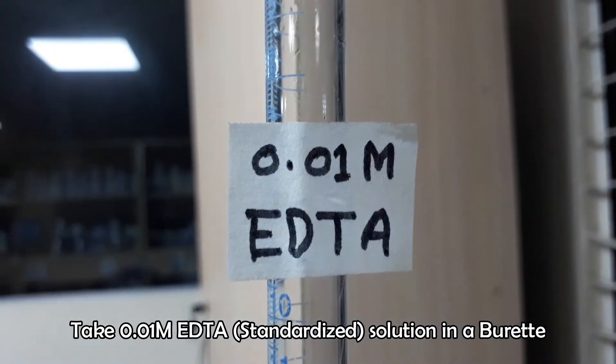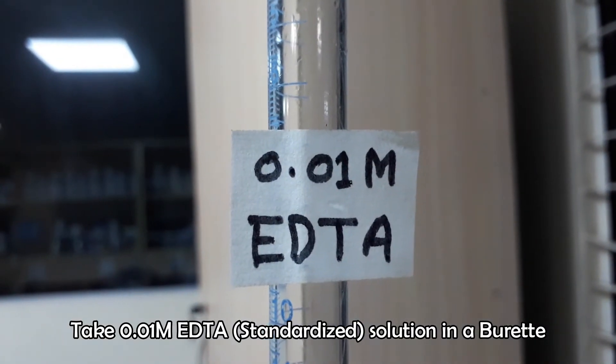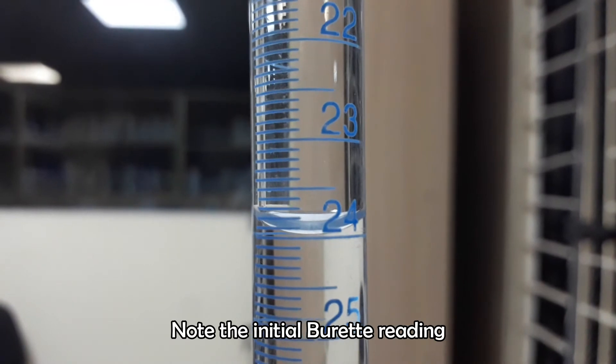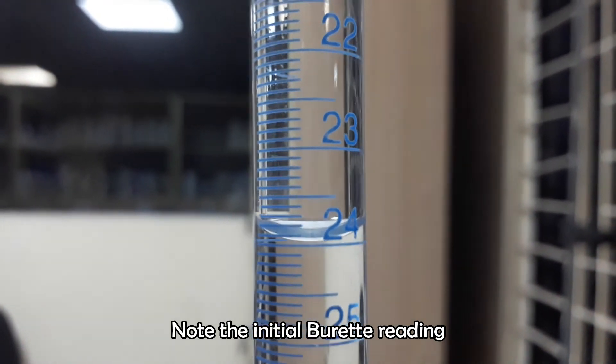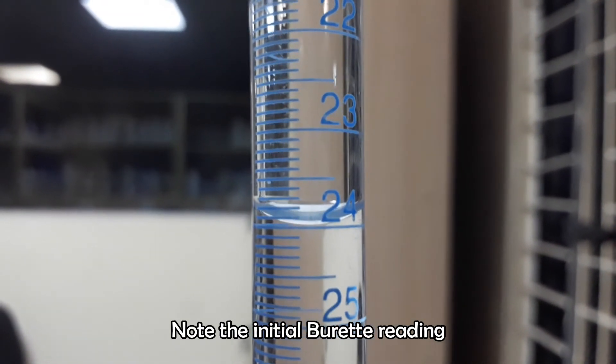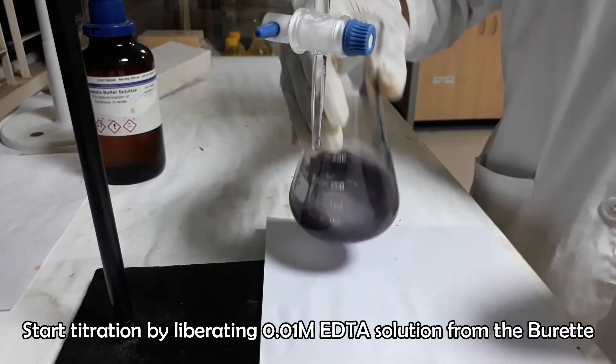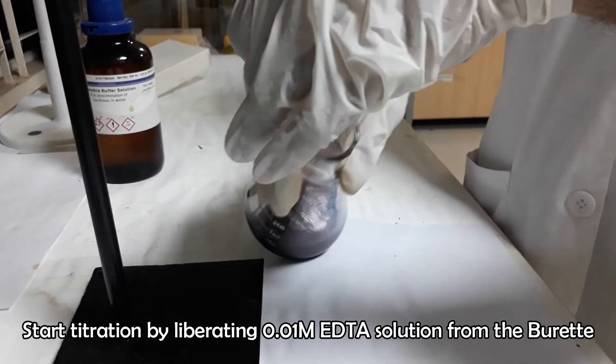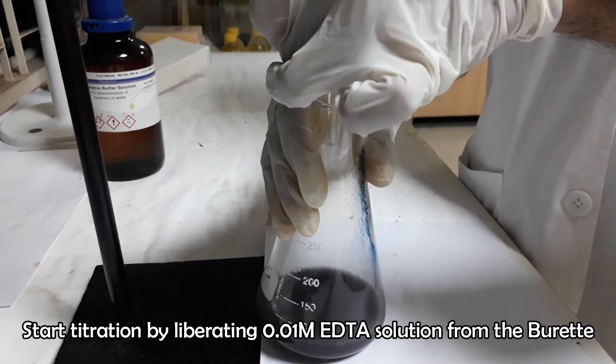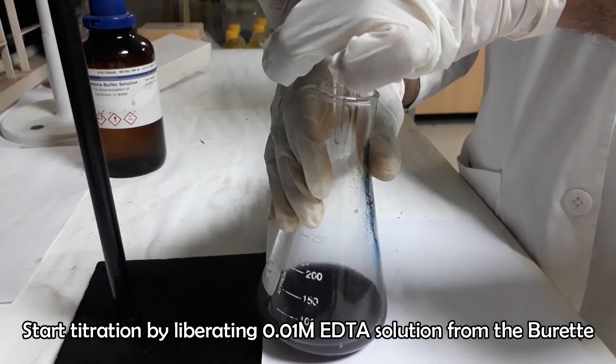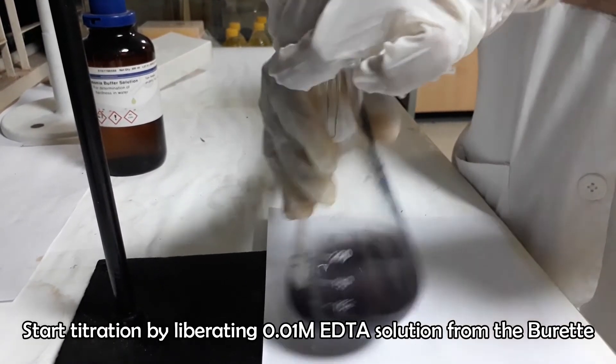Take 0.01 molar EDTA solution in a buret. Note the initial buret reading. Start titration by adding 0.01 molar EDTA solution in the flask drop wise from the buret.